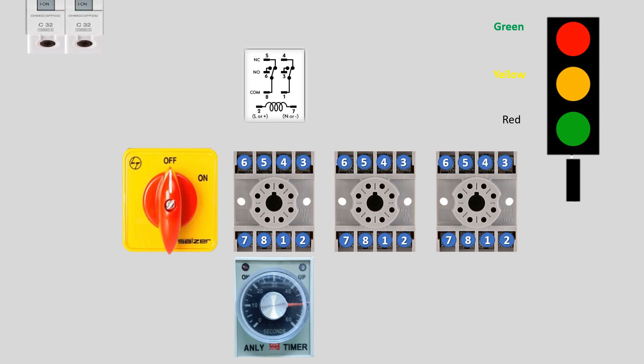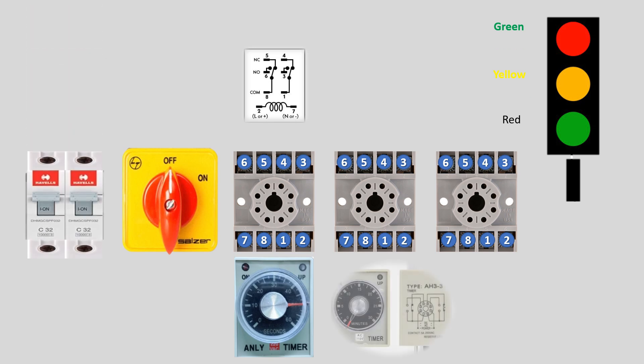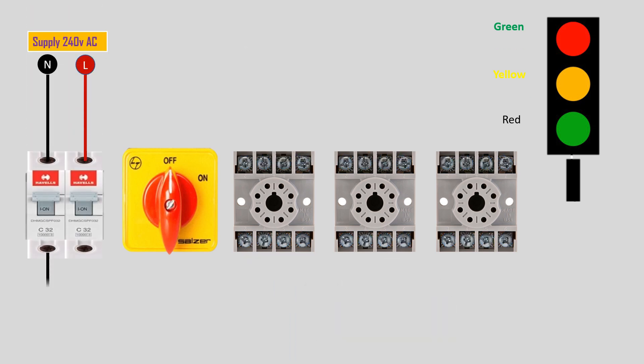Traffic lights are not just for roads—they are also used for railway crossings, airports, toll booths, and industrial areas to manage vehicle movement.